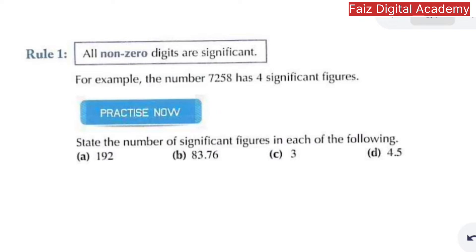There are some rules to determine the number of significant figures. The first rule is: all non-zero digits are significant. For example, the number 7258 has four significant figures because all these digits are non-zero. Similarly, 192 has three significant figures, 83.76 has four significant figures.